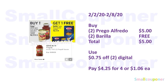For the Barilla and Bertolli deal — when you buy one Barilla pasta, you get one Bertolli free. Buy two Barilla Alfredo at $2.95 each, but when you buy two, they cost $5.00. Grab two Bertolli for free, since buying one pasta and one pasta sauce gets you one pasta free, and since you bought two, you get two pastas free. Total comes to $5.00; use the $0.75 off 2 digital and pay $4.25 for four items or $1.06 each.